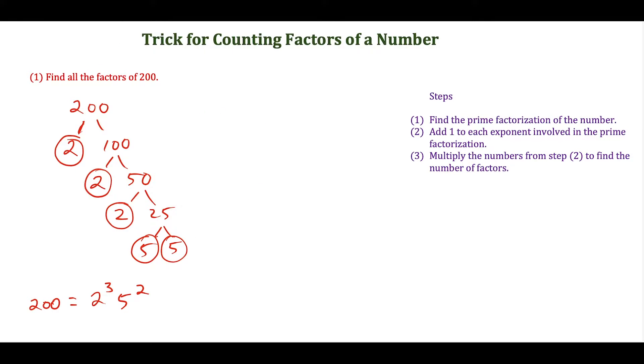Now this trick is to count the number of factors. We focus on the exponents in the prime factorization. The exponents are 3 and 2. In the next step, we add 1 to each of those, so we have 3 plus 1 times 2 plus 1. Then we multiply the numbers from step 2.